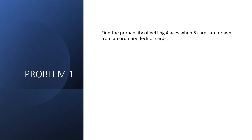Problem number one: find the probability of getting four aces when five cards are drawn from an ordinary deck of cards. In finding the four aces — since we need to get four aces when five cards are drawn — the chance of getting four aces from the deck is four combination four, since there are four aces and we take all four.